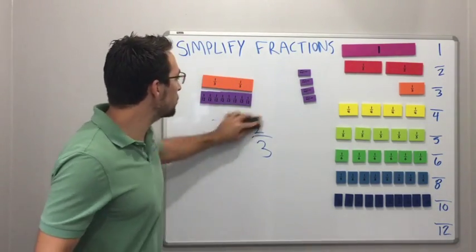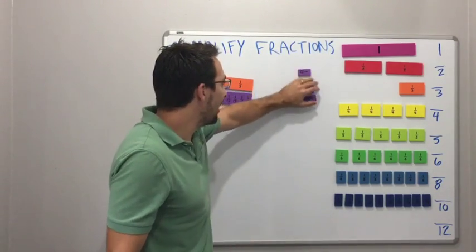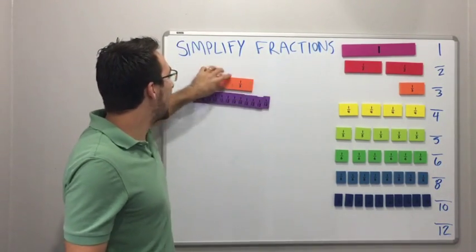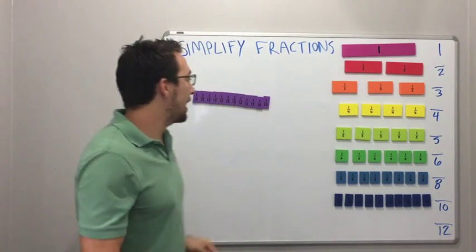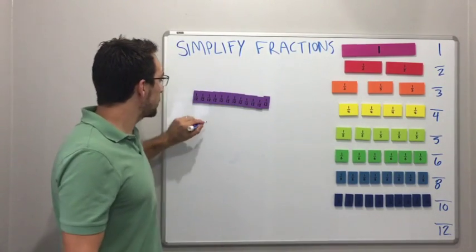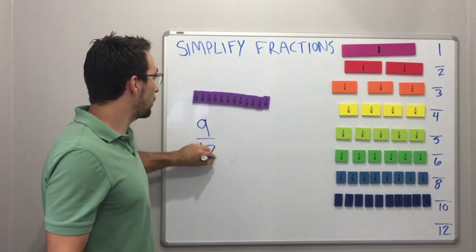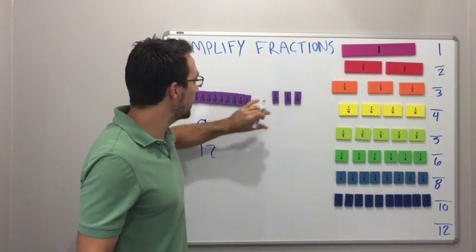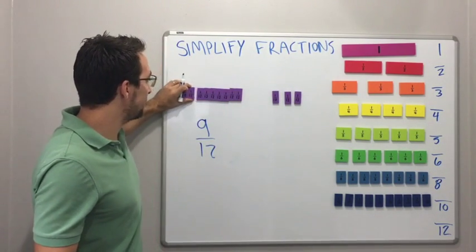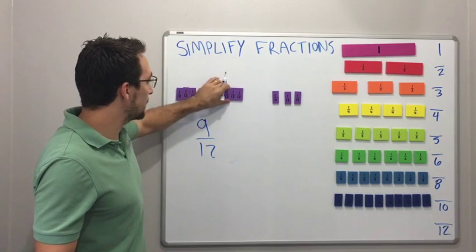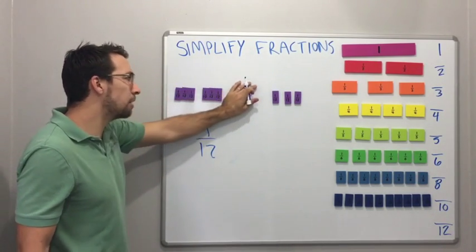So let's try it out again with another. Instead of using twelfths, well, we can use twelfths. What if we have 9 out of 12? Right? So 9 out of 12. 1, 2, 3. Right? So this gives us 9. 3, 6, 9. Boom. 9 out of 12.